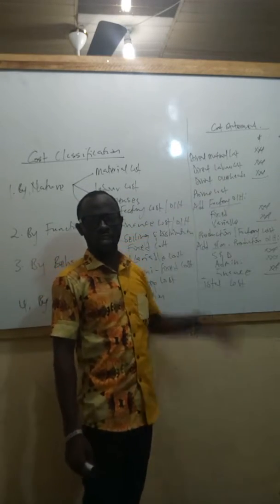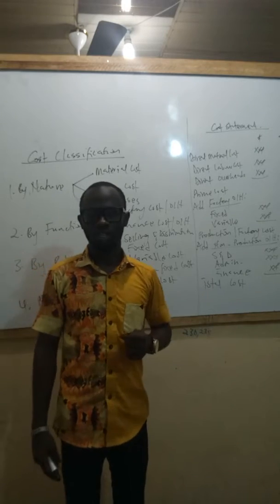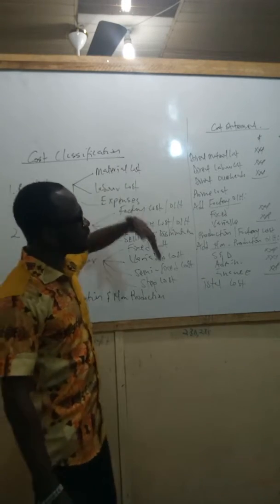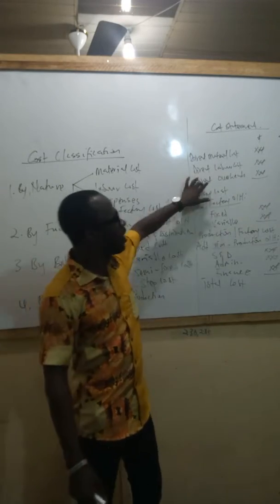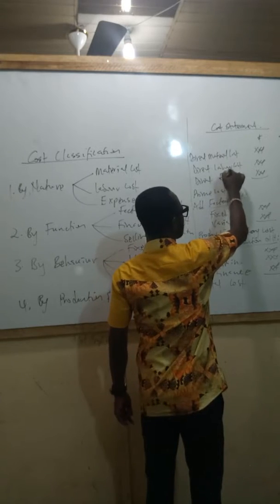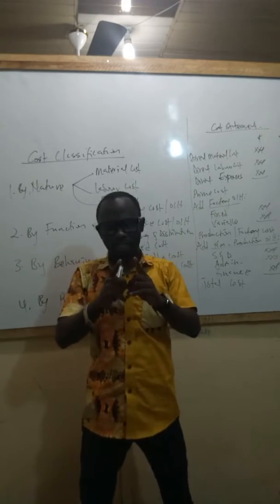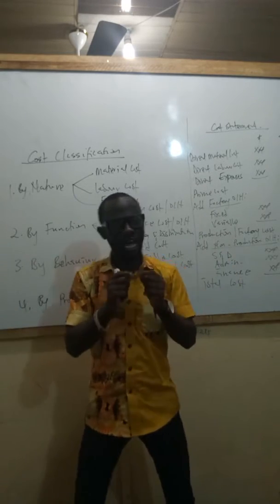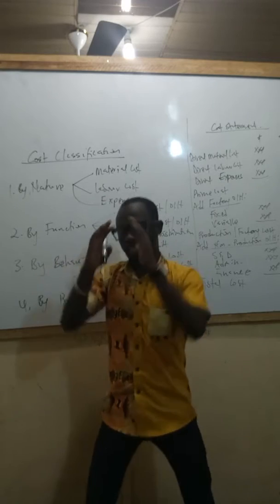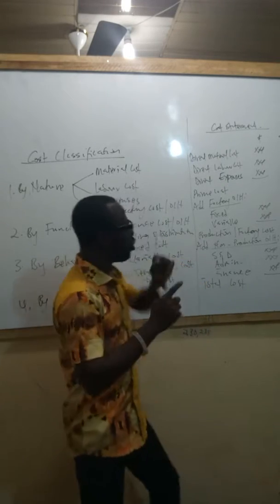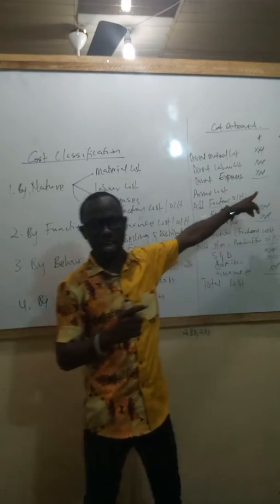This is the proforma of the cost card we will be using, based on everything discussed about cost classification. Looking at a cost card, first we bring our direct costs: the direct material costs, the direct labor costs, and the direct expenses we incur. The summation of all direct costs gives us prime costs, and the summation of all indirect costs gives us overheads. So when we sum direct material, direct labor, and direct expenses, that gives us the prime costs - as seen in the second column.